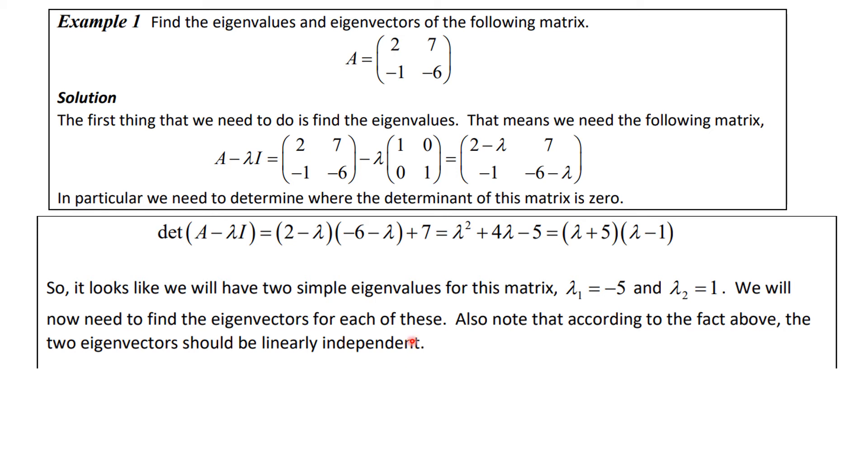Now we need to find the eigenvectors for each of these simple eigenvalues. So what we're going to do is we're going to take lambda 1 equal minus 5, we're going to substitute it in this equation and solve what we get. And then for lambda 2 equal 1, we're going to put 1 in this equation and we will solve for the eigenvectors. So that's what's going to happen and we expect these to be linearly independent, the eigenvectors.